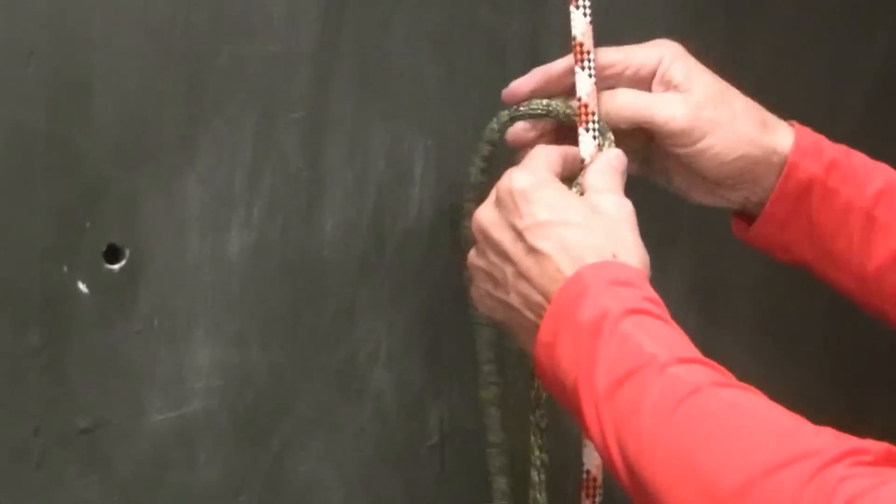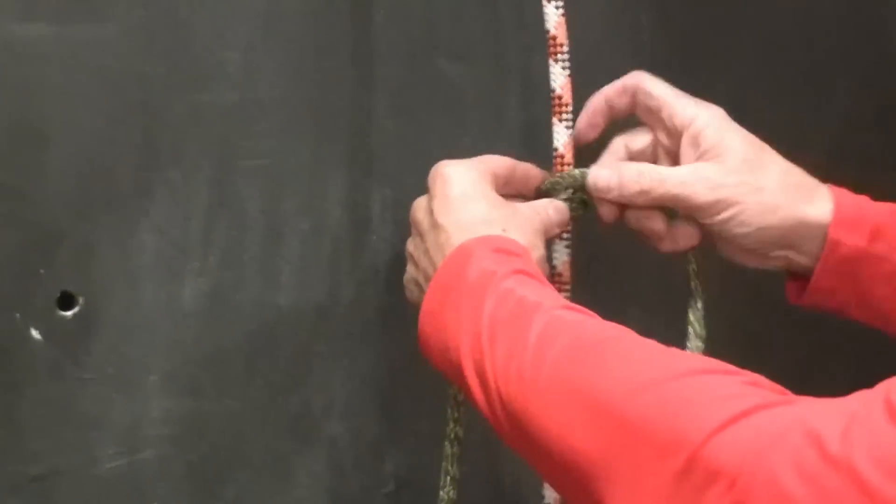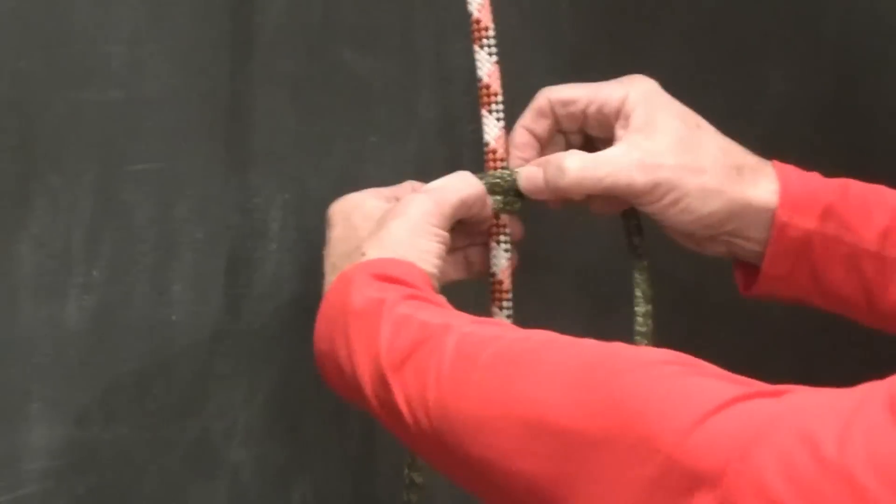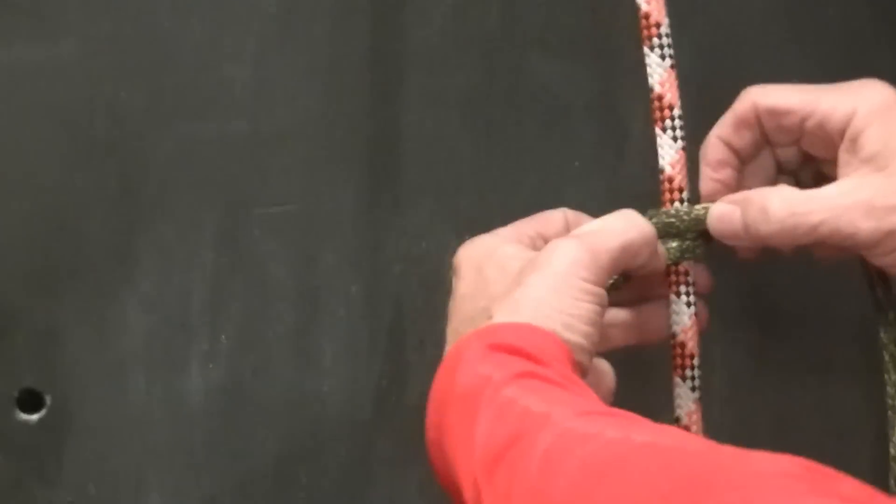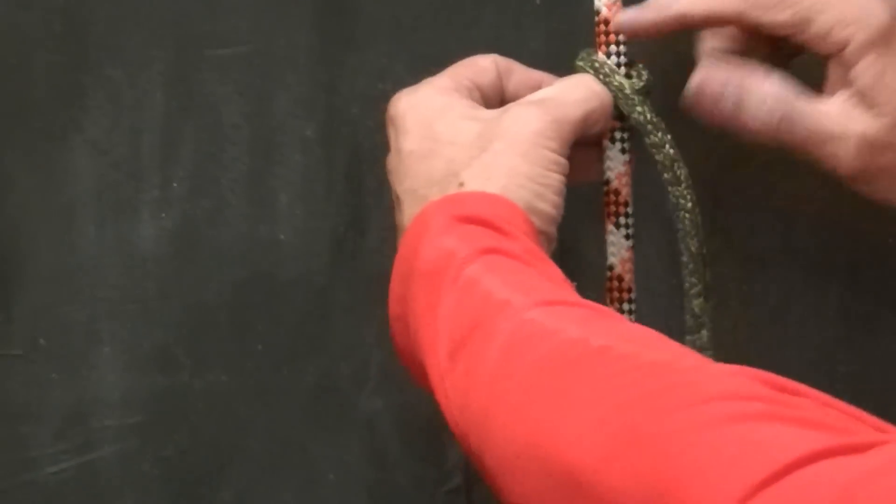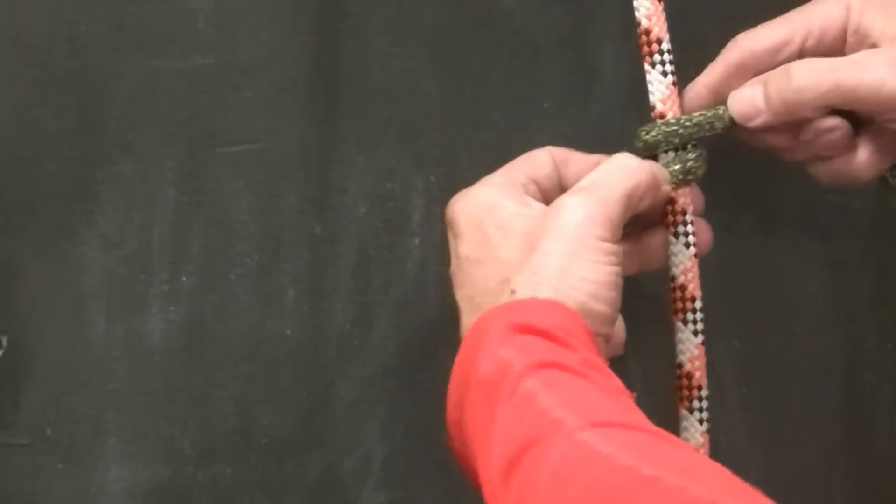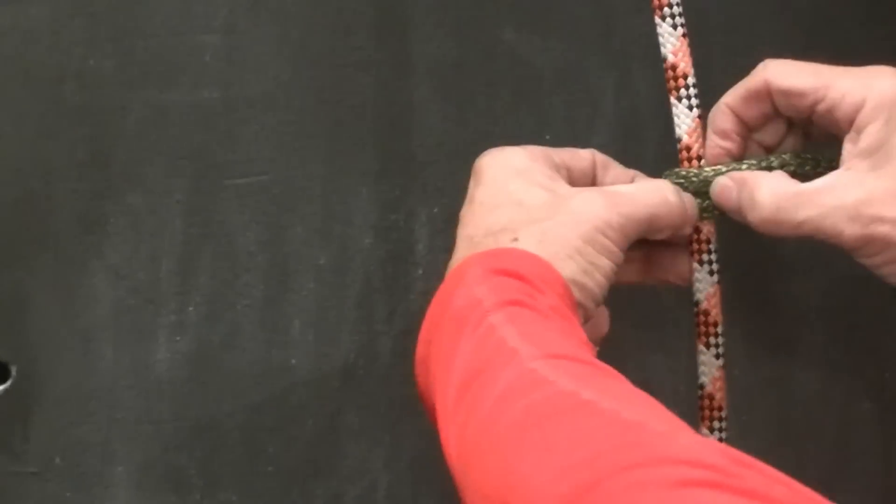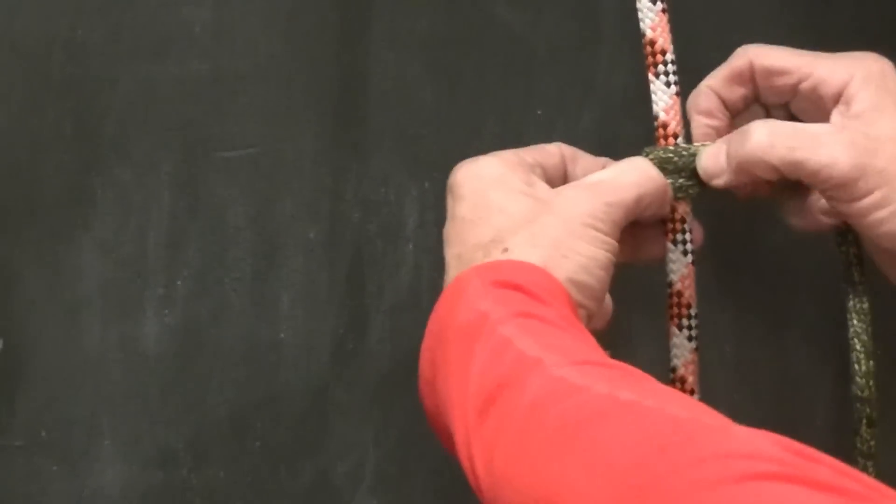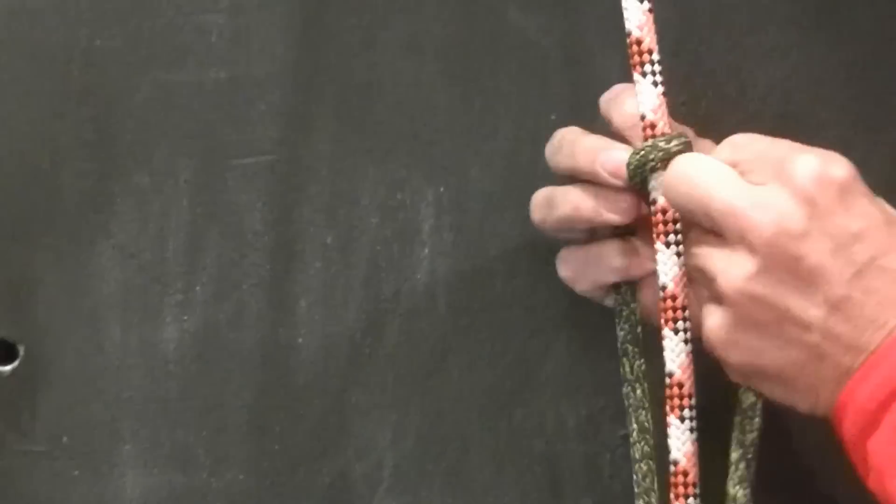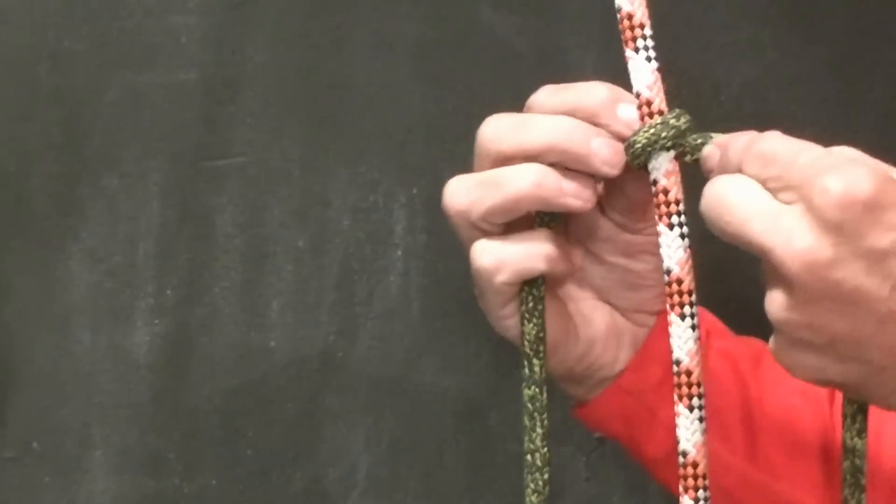The first component is a wrap. A wrap is a 360-degree turn around the rope. It doesn't matter whether you are wrapping up or wrapping down or going counter-clockwise or clockwise. It is a 360-degree turn around the rope. That constitutes a single wrap.